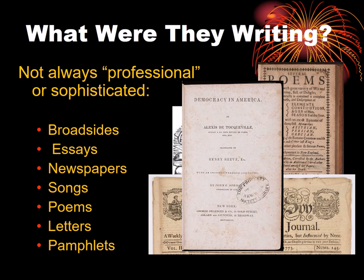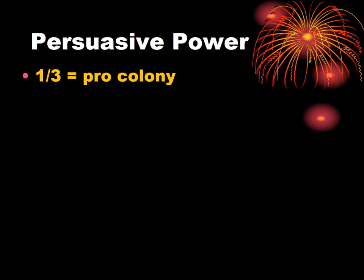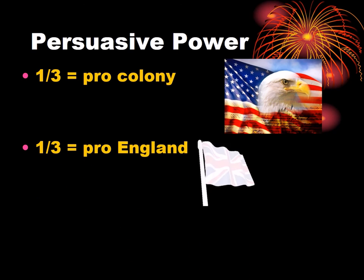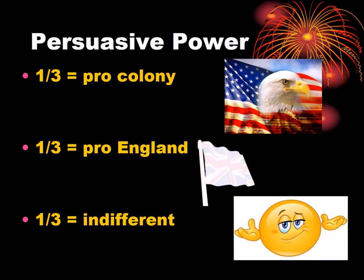Thus, never was the need greater for persuasive, well-written documents. At one point, only one-third of the colonies was in full support of the revolution, another one-third was loyal to England, and the last one-third was rather indifferent — they figured they had it pretty good, were making good money, and were comfortable and happy, so why rock the boat? The founding fathers needed to create convincing arguments that the revolution was necessary, and the writing of the time needed to be powerful enough to convince the colonists that the revolution was vital.